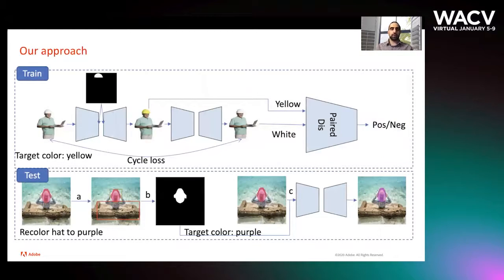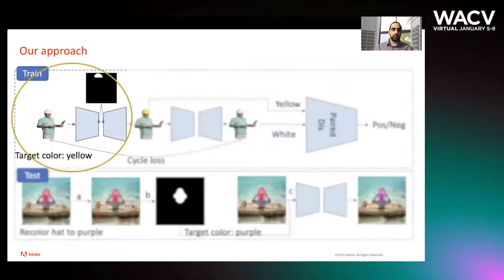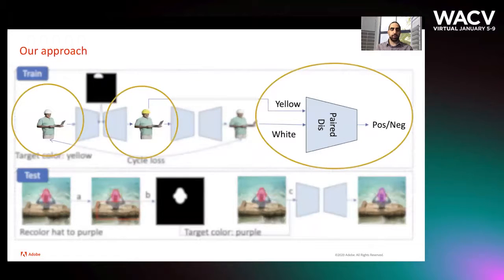Now how do we do the training? For training we use adversarial learning, so we have a generator that takes the original image, a mask, and the target color and generates a new image. This new image and original image are passed to a pair discriminator that looks at both images at the same time. The details of the pair discriminator as well as our generator are in the paper.